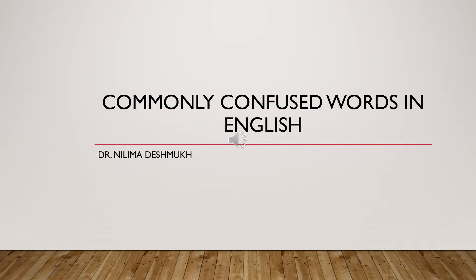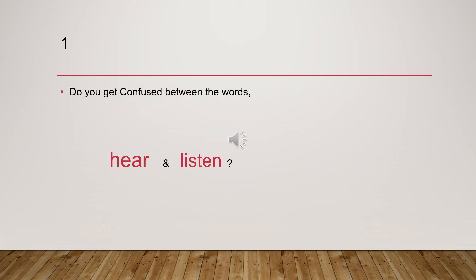When we say we hear something or that we have heard something, it means it has happened automatically — it has come to our ears. But when we say we are listening to something, or we have listened to something, that means we are paying attention. When we listen to something, we are giving it focused attention. This is the difference between 'hear' and 'listen.'